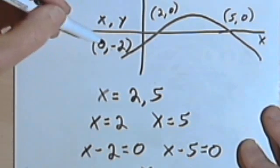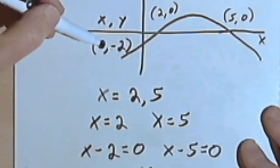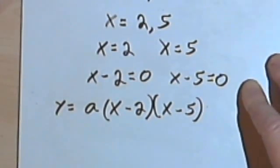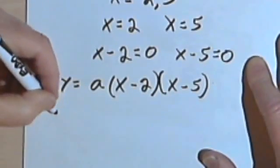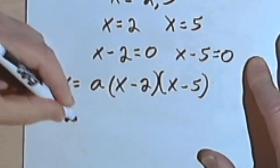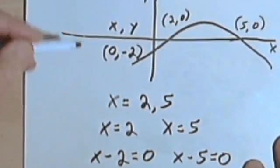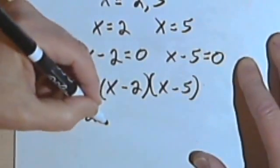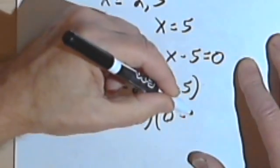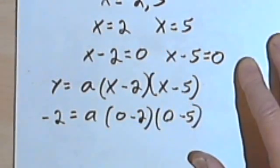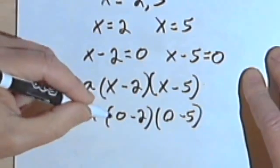So anytime I've got an ordered pair, all I have to do is take that pair and plug them in where I've got x's and y's. So I'm going to take the y equals negative 2, I'm going to replace the y with the negative 2, I'll still have this a, and then instead of x, I'm going to have 0. So I'll have 0 minus 2 times 0 minus 5. And now all I've got to do is multiply this all out and find out what a equals.